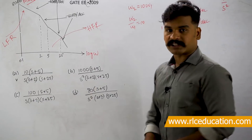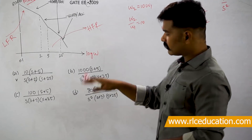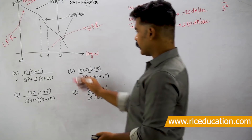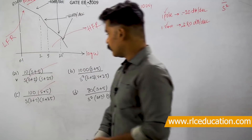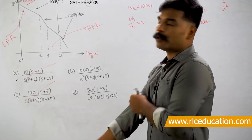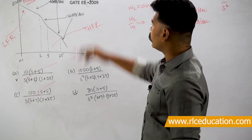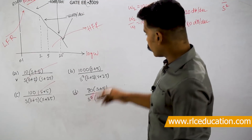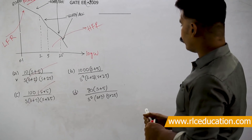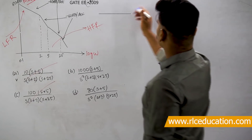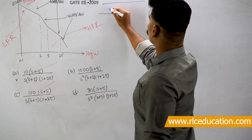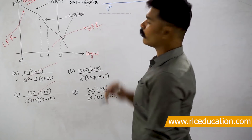From those two poles at origin I can directly eliminate options A and C, because options A and C have only one pole at origin, while it is clearly evident there are two poles at origin. So options B and D can be the answer. Framing the transfer function so far: I have two poles at origin, written as 1/s².